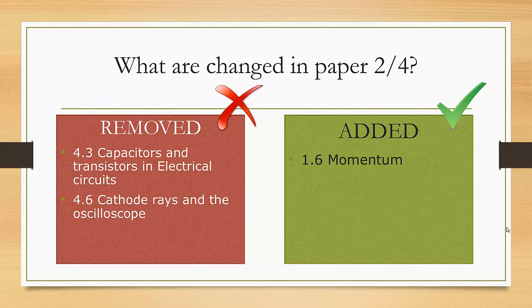Basically, they have taken away the capacitor and transistor in the circuit, and also taken away the cathode ray which emits the electron and also the oscilloscope which is more about the waveform. Instead, they have added the momentum in the mechanics.